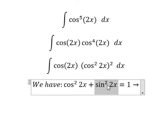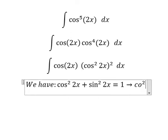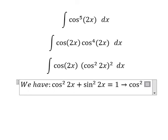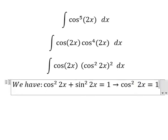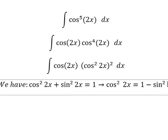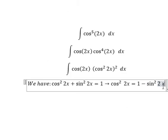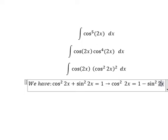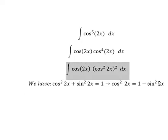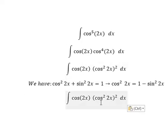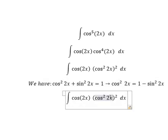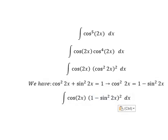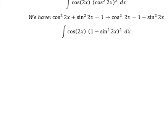Now I will put this one to the right and we have cosine squared 2x equal to one minus sine squared 2x. So I need to change cosine squared 2x into one minus sine squared 2x.